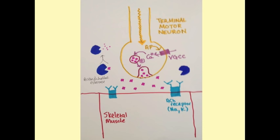We need acetylcholine to contract, but too much causes the muscle to be overtonic, and too little leaves the muscles flaccid.